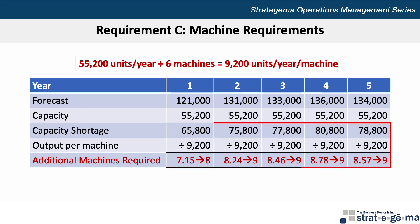Applying the same methodology to the remaining years two through five shows us that we will require 9 additional machines to meet forecasted demand in each of those years.